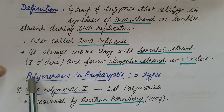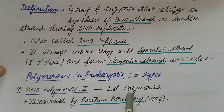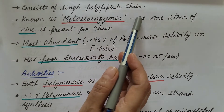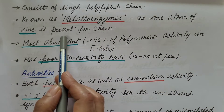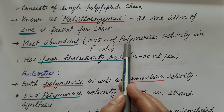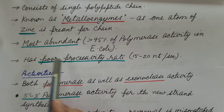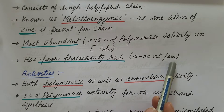Now, the types of polymerases in prokaryotes. There are five types. First is DNA polymerase 1. It was first discovered by Arthur Kornberg in 1958. It consists of a single polypeptide chain and is known as a metalloenzyme, as one atom of zinc is present per chain. It is the most abundant — greater than 95% of polymerase activity in E. coli is from DNA polymerase 1. It has poor processivity, adding 15 to 20 nucleotides per second.